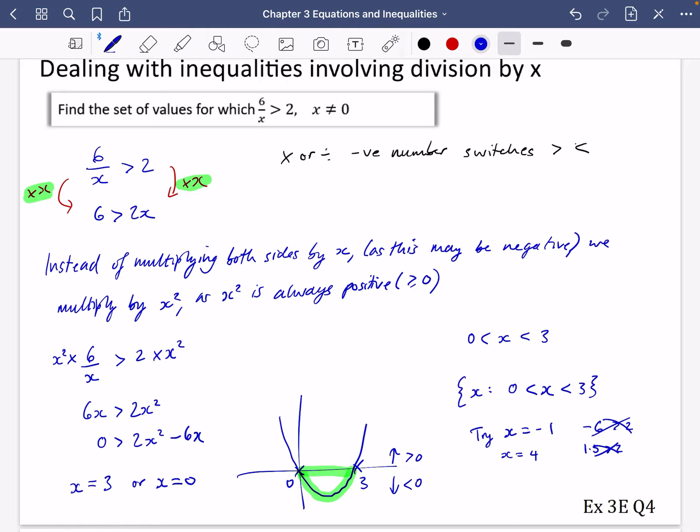So it's always good if you want to substitute some numbers in to check. But the main thing for this one is what I've got written here: instead of multiplying both sides by x, we multiply both sides by x squared instead. Now you can have a go. Exercise 3E, question 4.